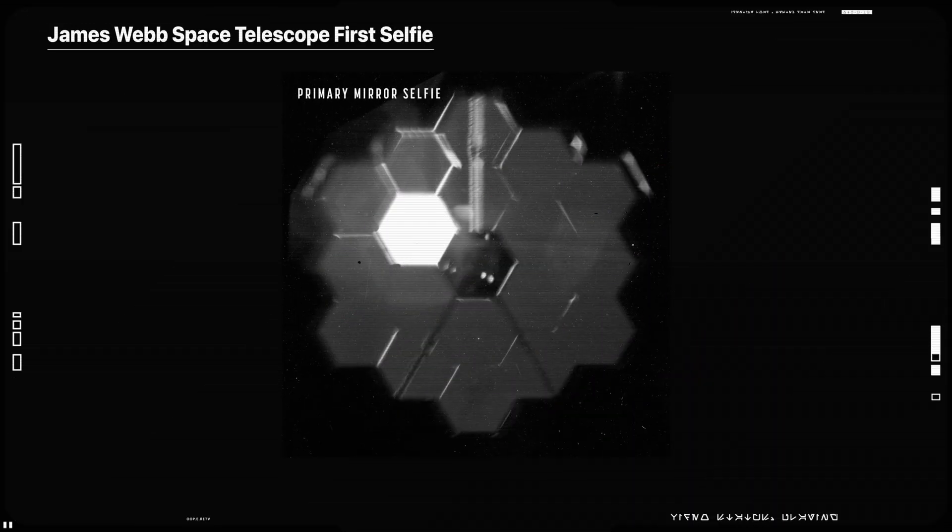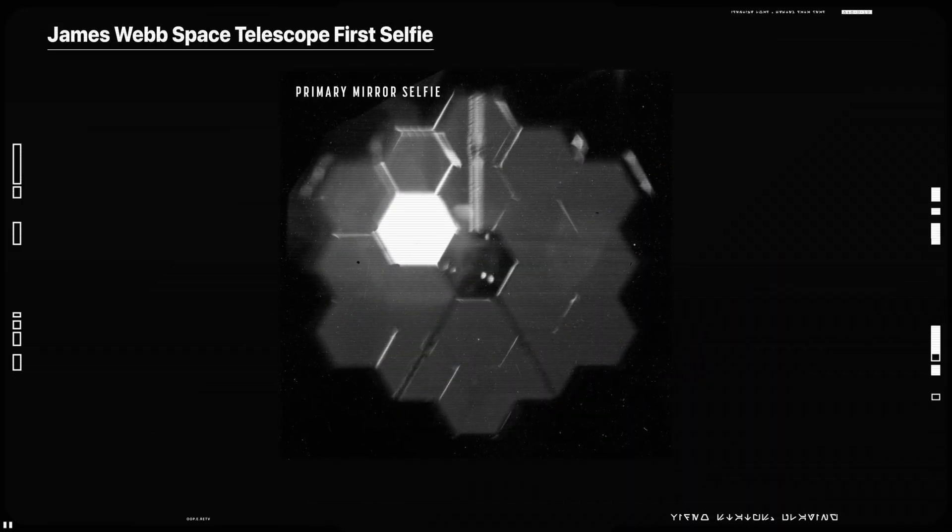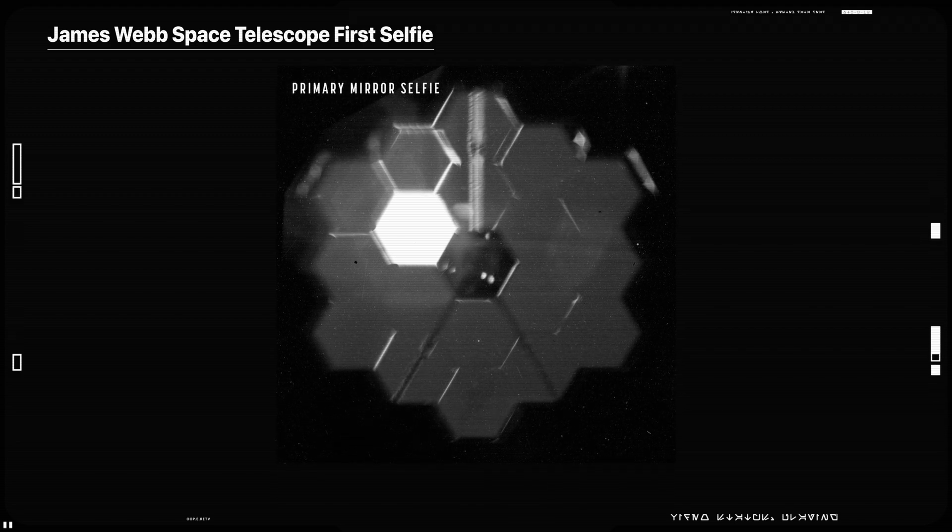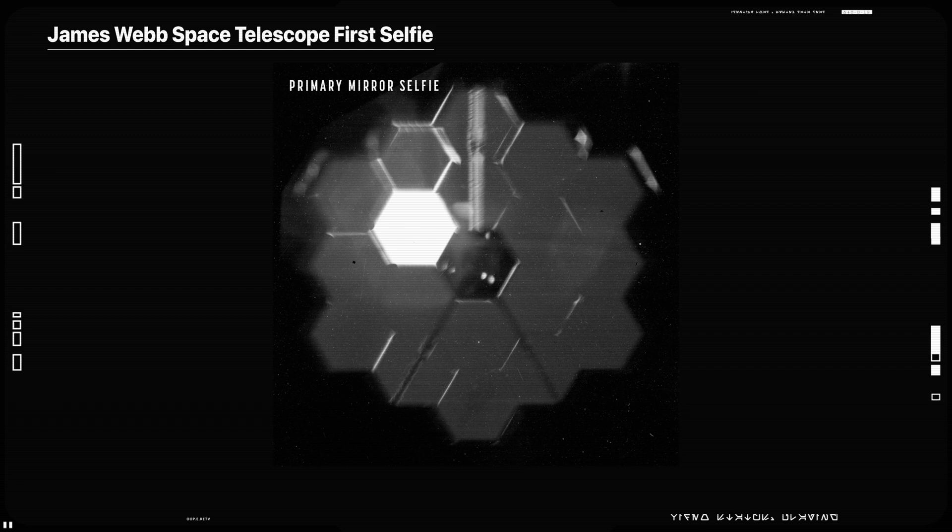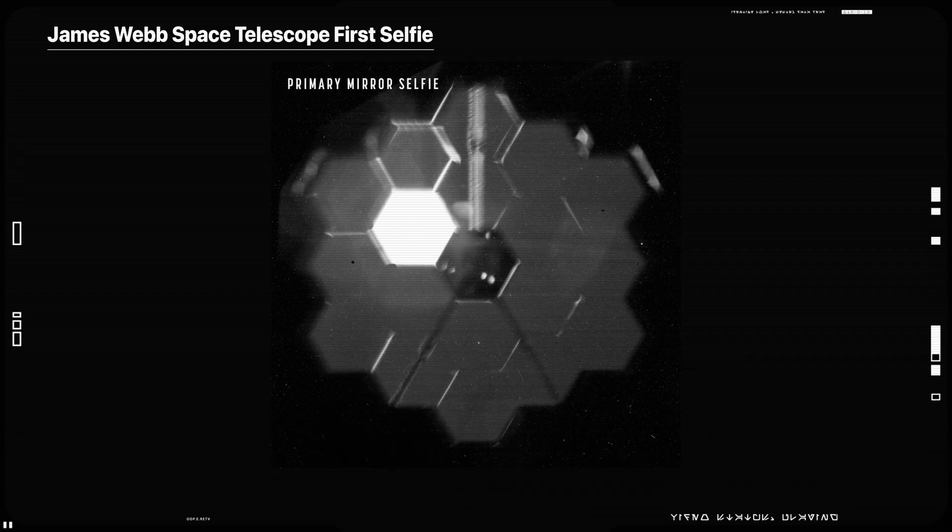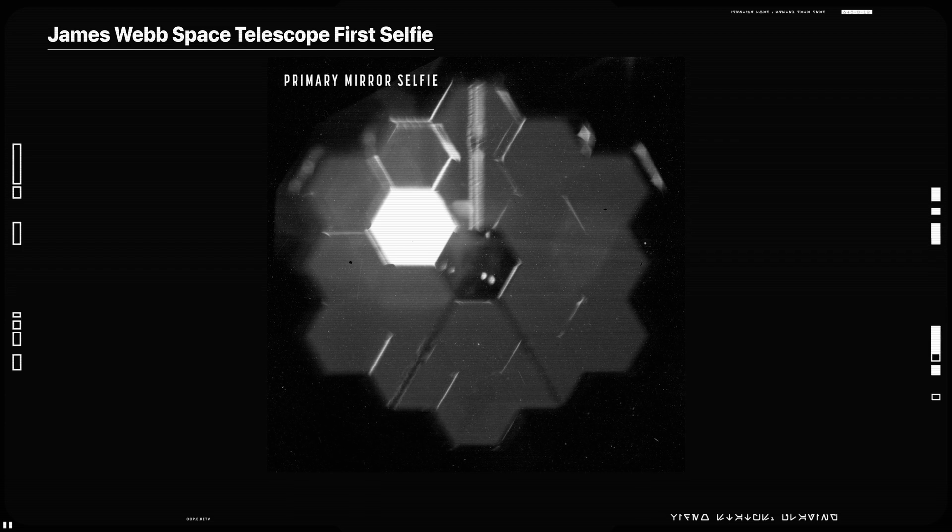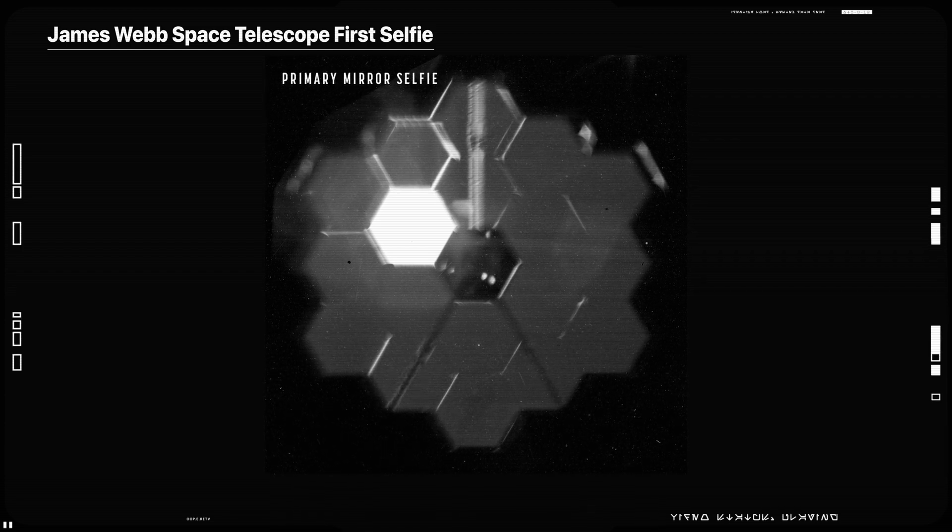This selfie was created using a specialized pupil imaging lens inside of the NIR cam instrument that was designed to take images of the primary mirror segments instead of images of space. This configuration is not used during scientific operations and is used strictly for engineering and alignment purposes.